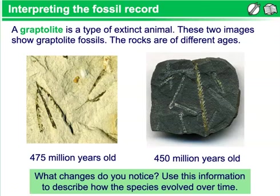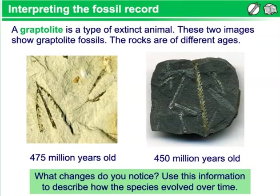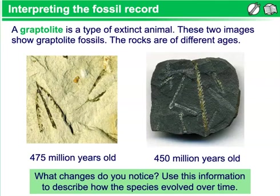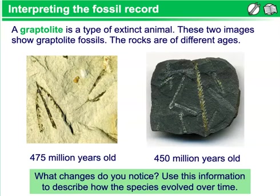The older fossil shows graptolites with multiple stipes and downward pointing theca, whereas the later fossil shows graptolites with only one stipe and upward pointing theca. This is a trend seen in the fossil record for the species. Over the time in which they existed, graptolites evolved to have fewer stipes and upward pointing theca. Specimens between the ages shown here show various transition stages between these two states.